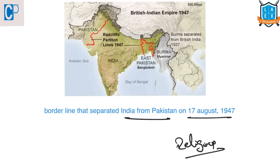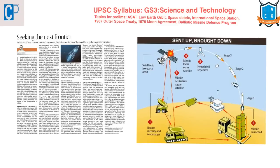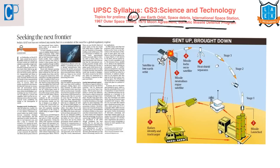The next article is 'Seeking the Next Frontier,' under GS Paper 3 under the topic of science and technology. Recently India successfully tested an anti-satellite missile by shooting down a live satellite, Microsat-R, located in the lower Earth orbit. This project is named Mission Shakti and it was led by DRDO. From the prelims point of view, we should know what is the anti-satellite test, lower Earth orbit, space debris, the International Space Station, the 1967 Outer Space Treaty, the 1979 Moon Agreement, and the ballistic missile defense program of India.